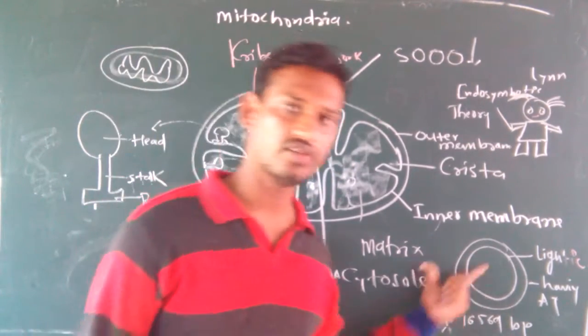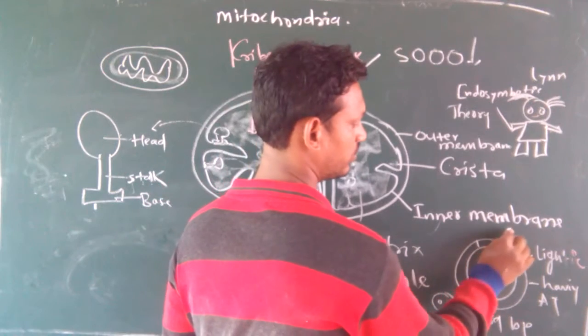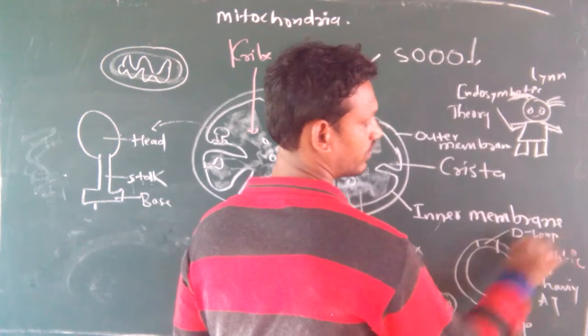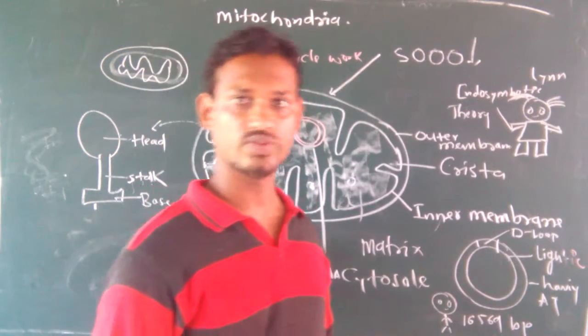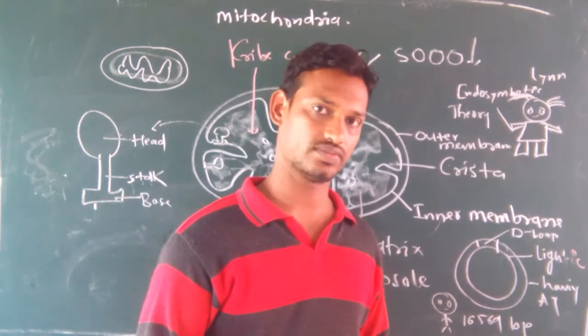All the regions of this DNA are coding except D loop. It contains a specific loop that is known as D loop, which is of non-coding nature.